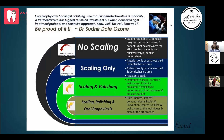There are four types of clinical approaches: no scaling, scaling only, scaling and polishing, and scaling plus polishing plus oral prophylaxis. I emphasize scaling, polishing, and oral prophylaxis access as the ideal practice. If you're doing scaling and polishing that's fair, but scaling only or no scaling will not give you the best results.